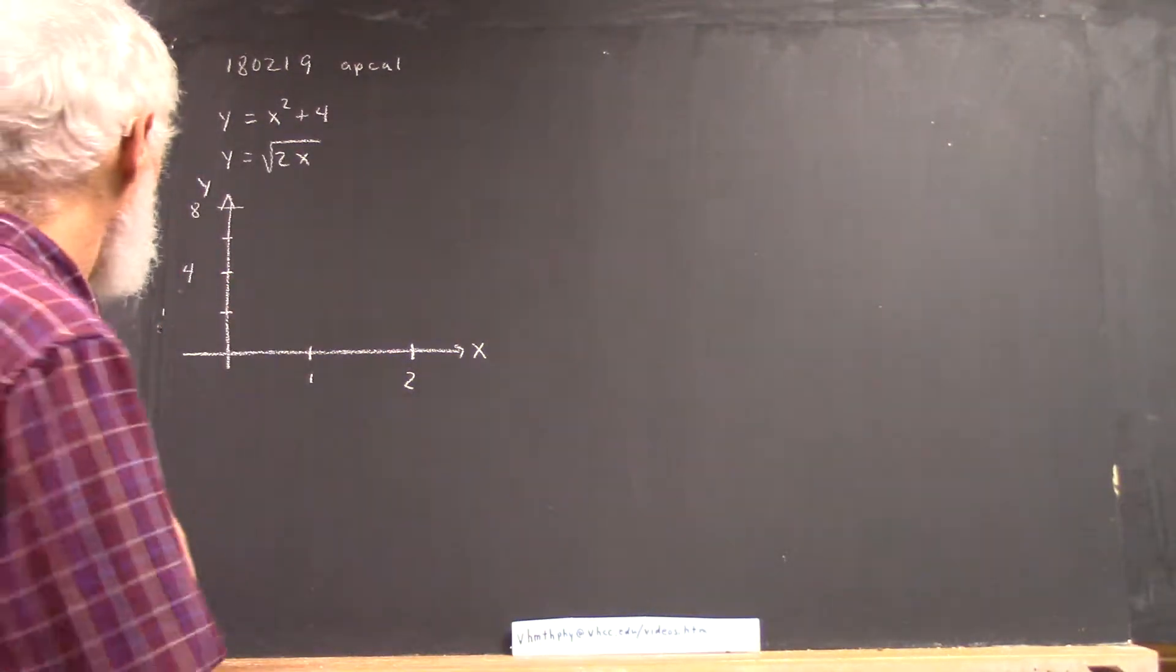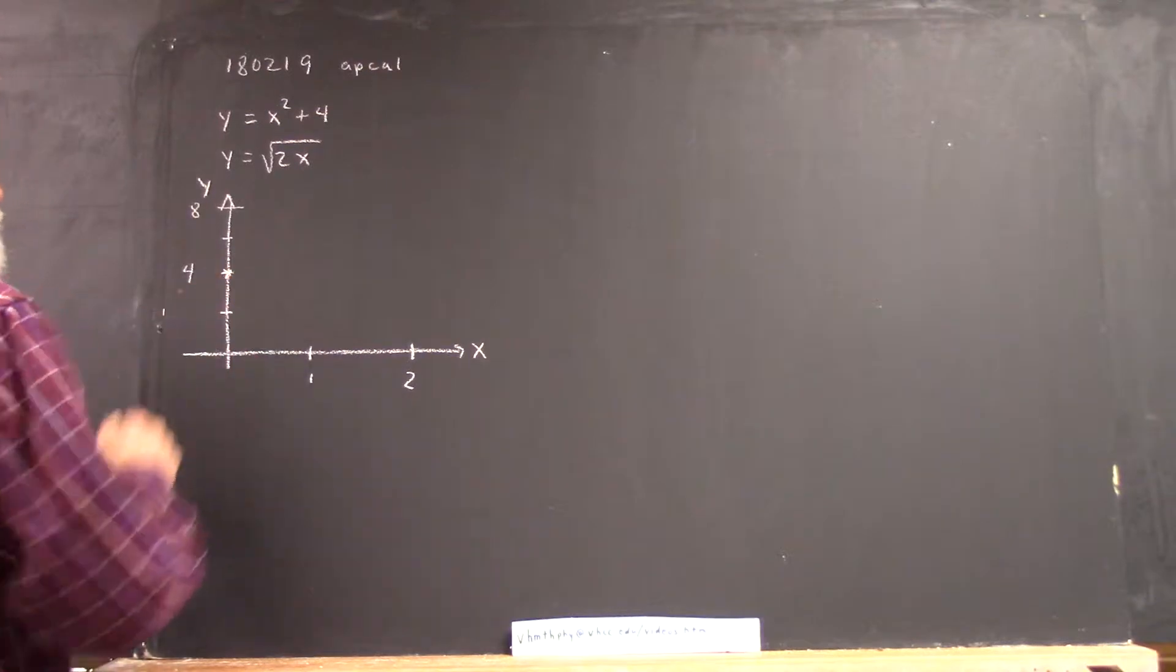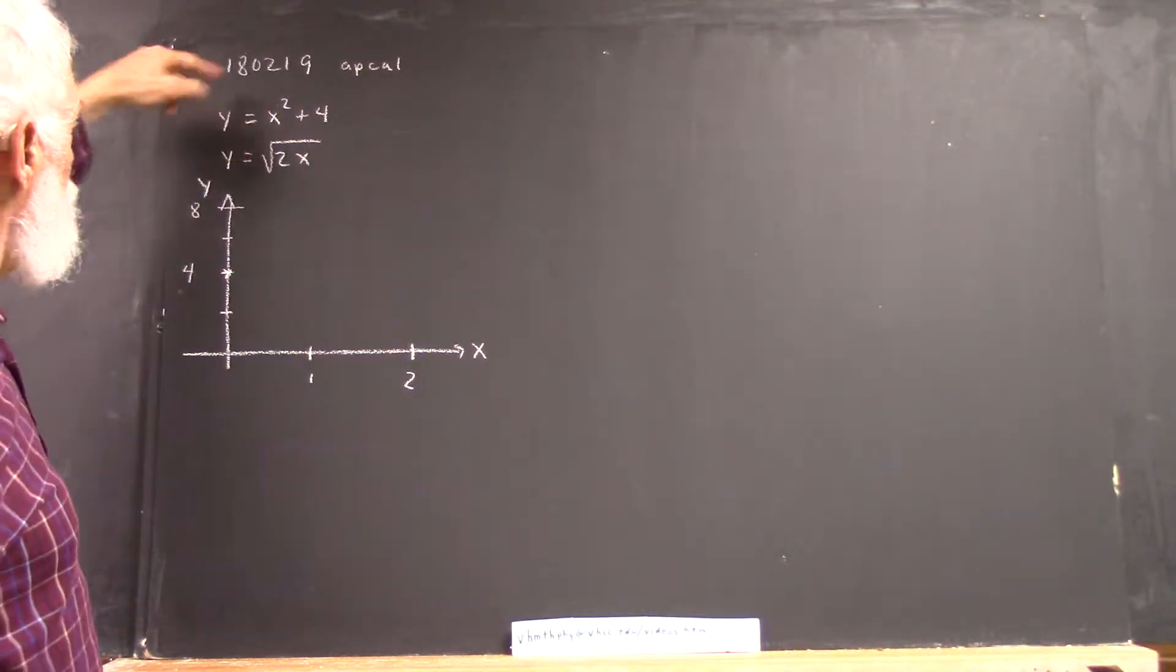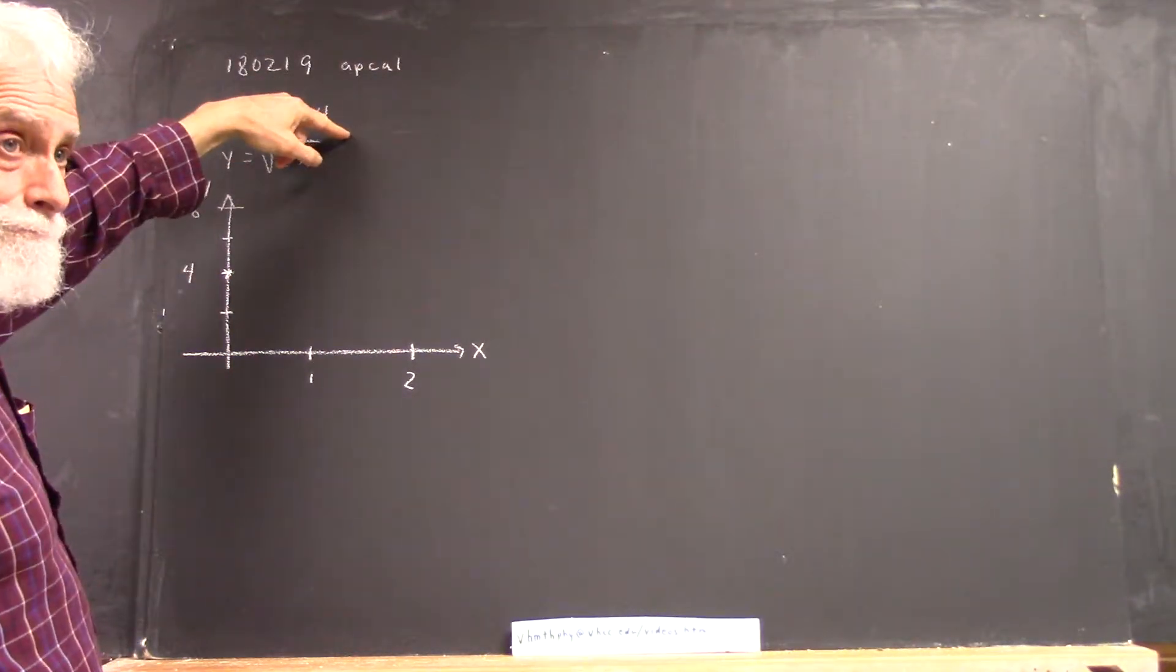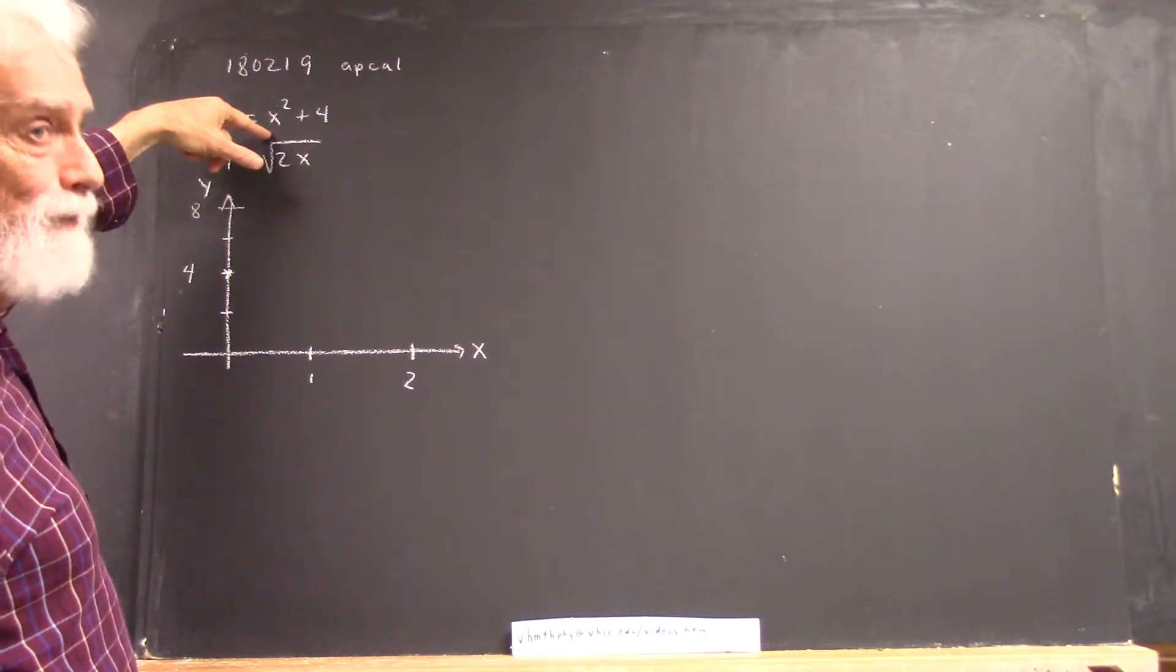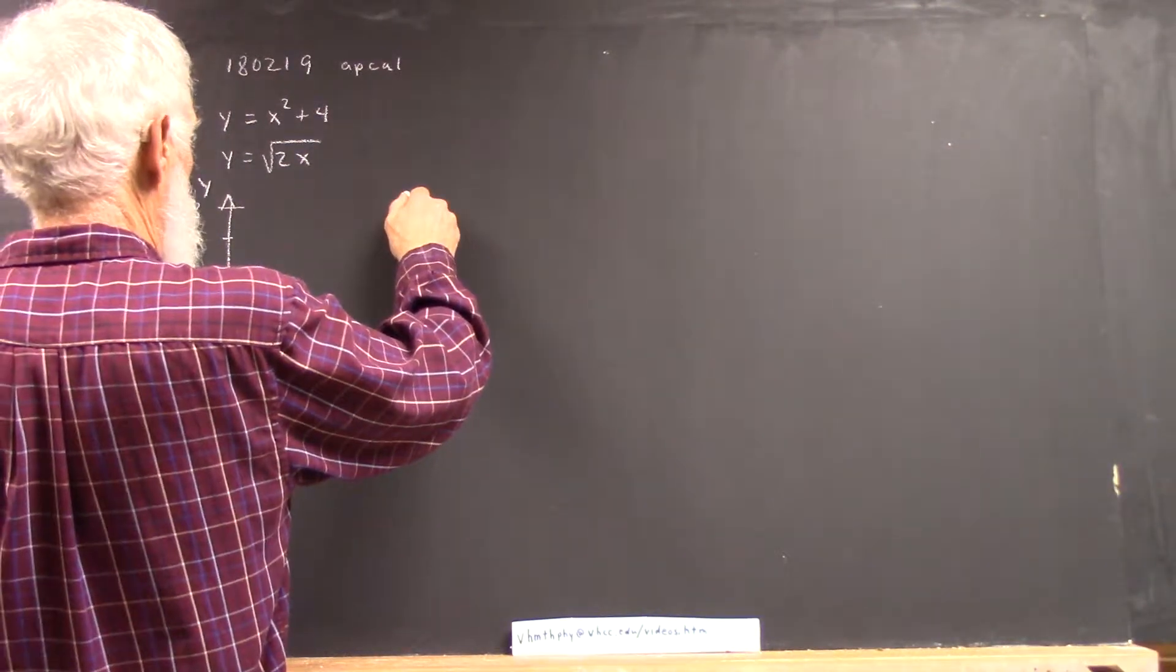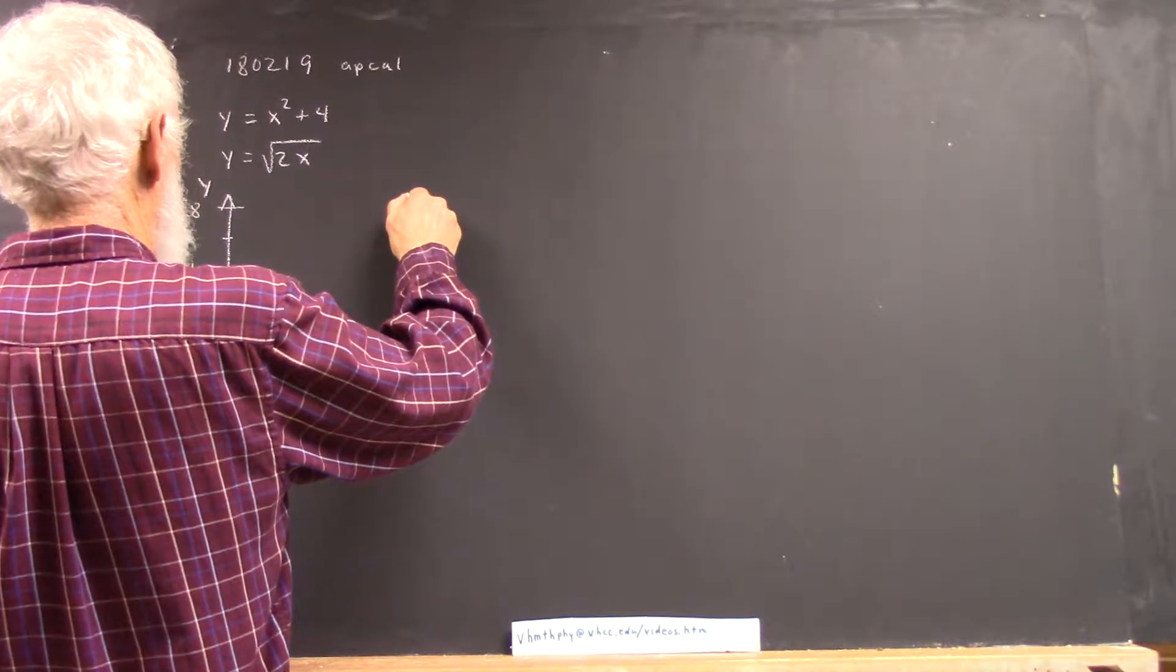I see the graph of x squared, looks good. When x is 0, x squared plus 4 is 4. When x is 2, x squared plus 4 is 8, obviously. So we're going to go from here to here, and we know that this thing is a parabolic graph.